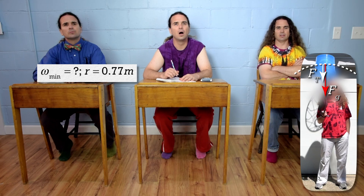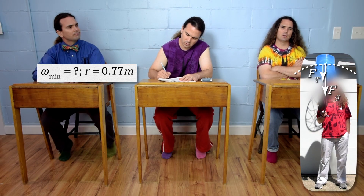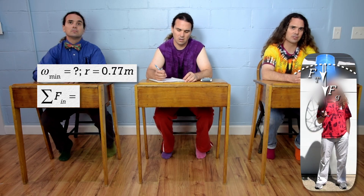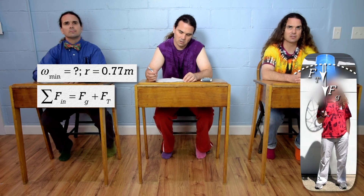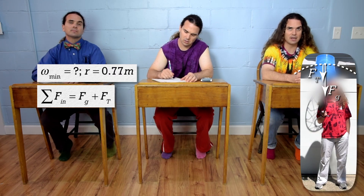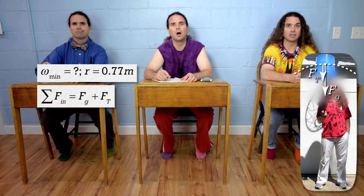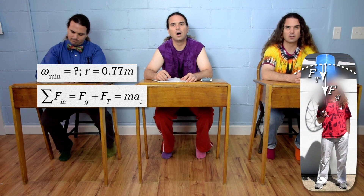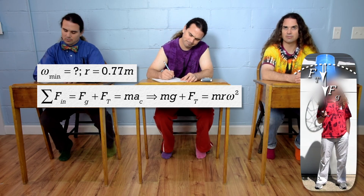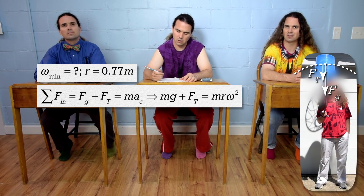The force of gravity is down and the force of tension is also down. Bo, please continue to solve the problem. Because the bucket is moving in a circle, let's sum the forces in the inward direction. The net force in the inward direction equals force of gravity plus force of tension. Shouldn't both of those forces be negative? No. The force of gravity and the force of tension are both positive because they are both inward toward the center of the circle, and the inward direction is always positive. The inward net force also equals mass times centripetal acceleration. Force of gravity equals mass times acceleration due to gravity. And centripetal acceleration equals radius times angular velocity squared. However, we don't know the force of tension, so we don't have enough here to solve for the angular velocity.